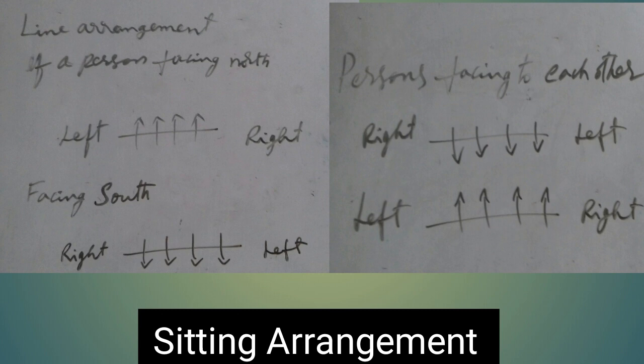So, there are different types of sitting arrangement: row-based arrangement, or circle and rectangle-based arrangement. The line arrangement is a parallel row-based arrangement.